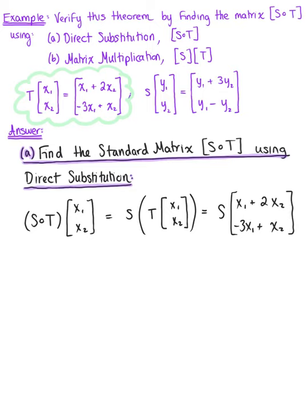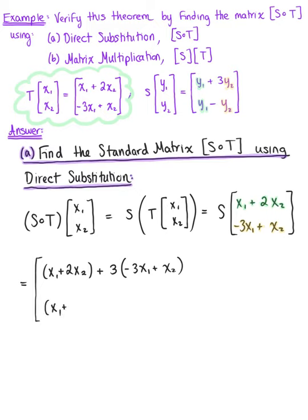Now we want to replace each y₁ and y₂ in linear transformation S with our substituted expressions. Equation 1 becomes (x₁ + 2x₂) + 3(−3x₁ + x₂), and equation 2 becomes (x₁ + 2x₂) − (−3x₁ + x₂).